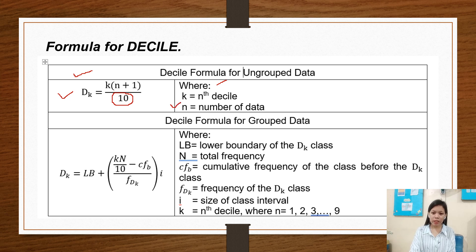So we have here the decile formula for grouped data. D sub K equals lower boundary plus K times N over 10 minus cumulative frequency before the decile class, times i over the frequency of the decile class.